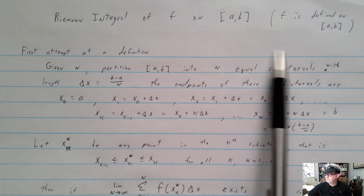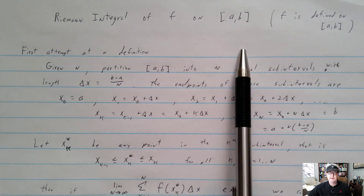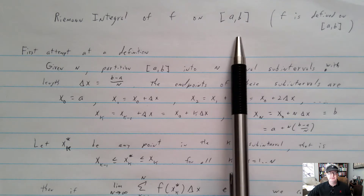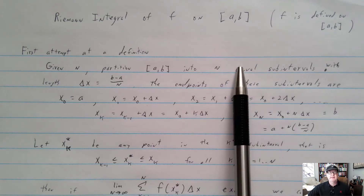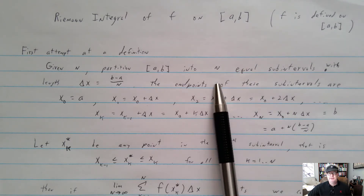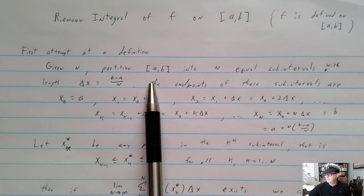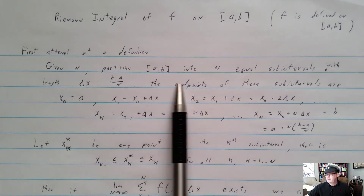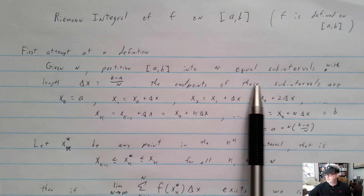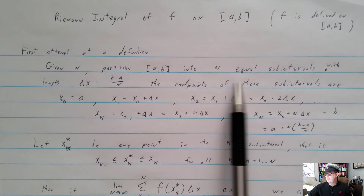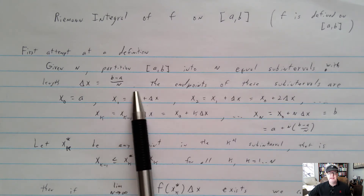We've got a function defined on [a, b], so every x value in this closed interval, f is defined. Usually what we think about is partitioning that interval into n equal subintervals. If you do that, each subinterval will have length (b − a)/n.